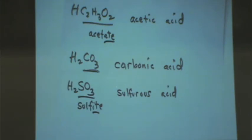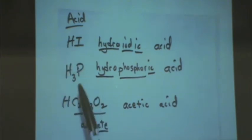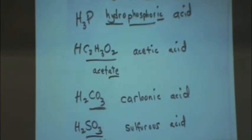When you use hydro, it's when it's a binary. It means two different types of atoms. H and I, H and P, et cetera. But now you see in these last three, we have more than two. There's four, there's three, three. So then in those cases, no hydro. And the absence of hydro tells you it's a polyatomic.